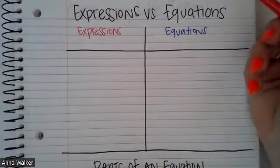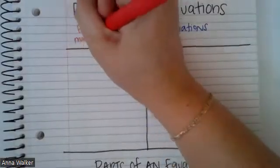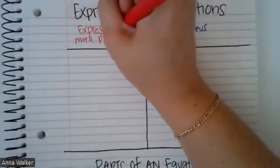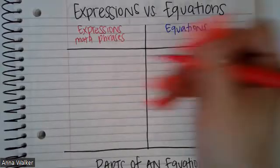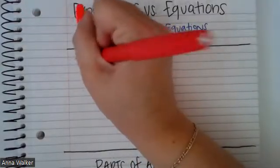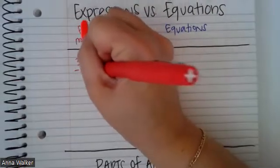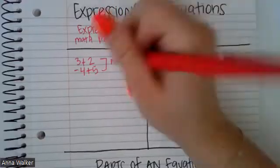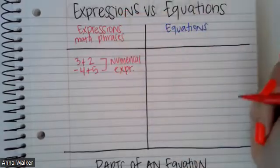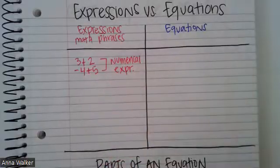Let's get into the difference between expressions and equations. Expressions are just math phrases — just math phrases. We have two different kinds of expressions. We could have what's called a numerical expression. For example, three plus two, or negative four plus five — these are called numerical expressions because they involve numbers and only numbers. There's nothing else involved.